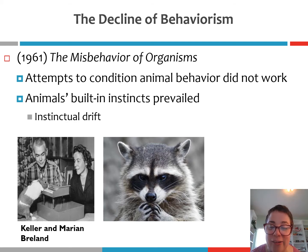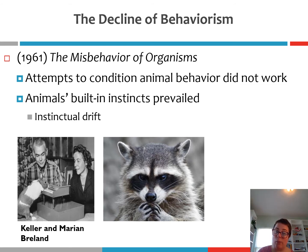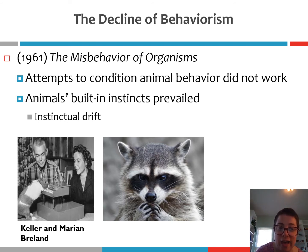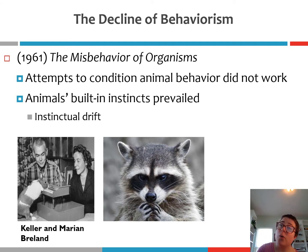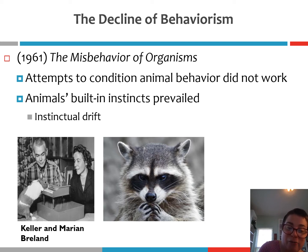No matter how many trials they ran where they taught the raccoon it would be rewarded for putting pegs into a piggy bank, it always reverted back to its desire to roll them around on the ground like it typically would for a food source. So why does that matter? Well, it goes against Skinner's argument. They actually wrote their own text called 'The Misbehavior of Organisms,' discussing this tendency for instinctual drift. It suggests that not all behavior is learned or a product of simple associations — we also come into the world exhibiting certain behaviors called instincts, and those instincts are often very powerful and can trump behaviors conditioned by the environment.